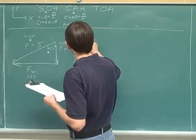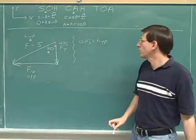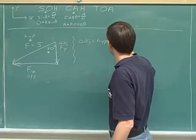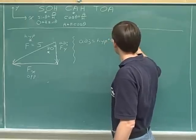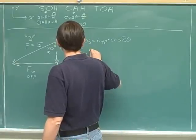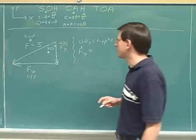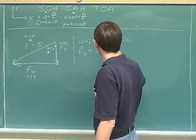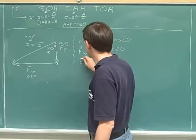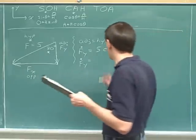To find the adjacent side, we use the hypotenuse and the cosine, which gives you the adjacent side. Our angle here is 20°. The adjacent side is f_y — since we're doing trig, we use the magnitude. The hypotenuse is 5, so the magnitude of f_y equals 5 times cosine 20°, which is 4.7.